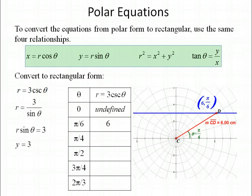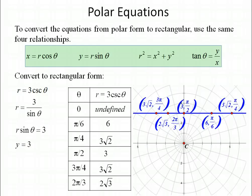Let's try more points. At pi over 4, sine is square root of 2 over 2, giving r equals 3 square roots of 2. At pi over 2, sine is 1, so r equals 3. At 3 pi over 4, sine is square root of 2 over 2, giving 3 square roots of 2. At 2 pi over 3, sine is square root of 3 over 2, so after simplifying and rationalizing we get 2 square roots of 3. Plotting all these points on the grid, they all land right on the line y equals 3, just at different radius lengths for each angle.